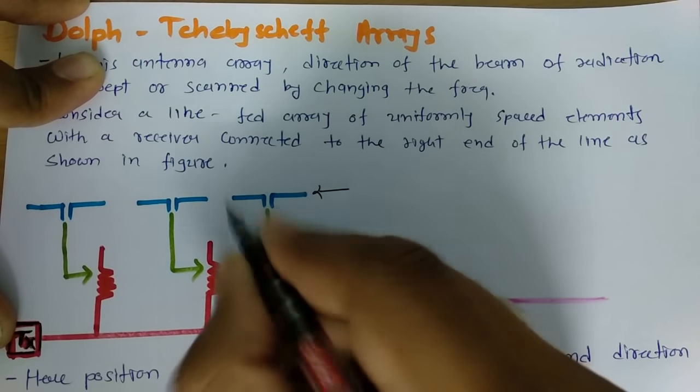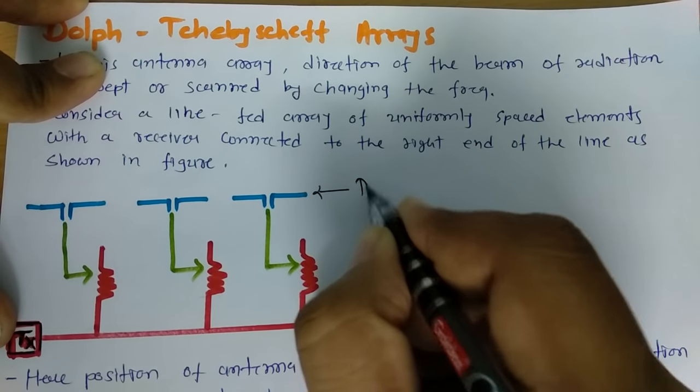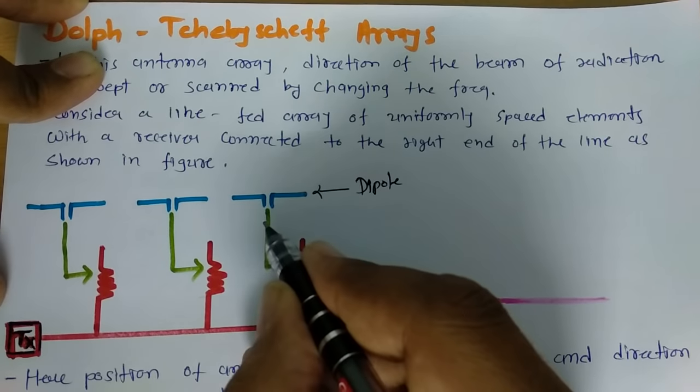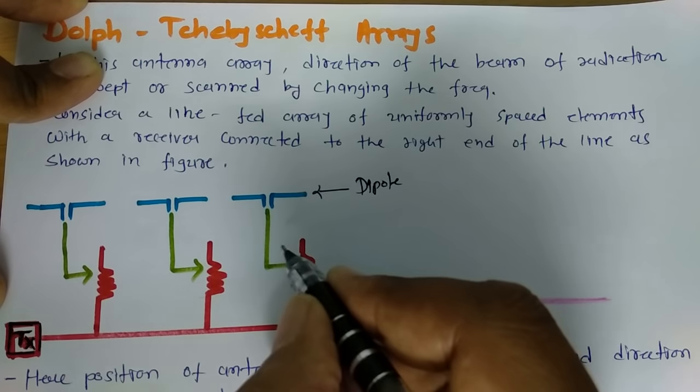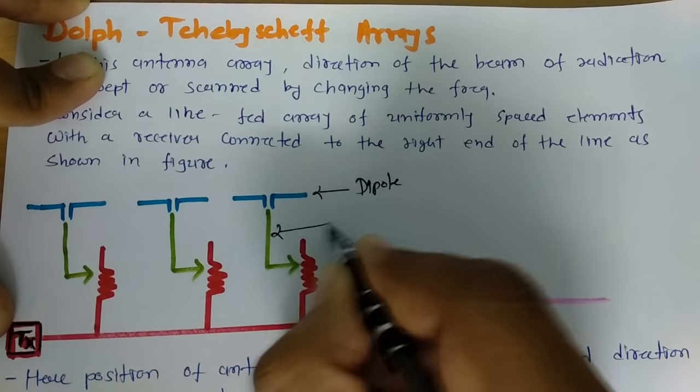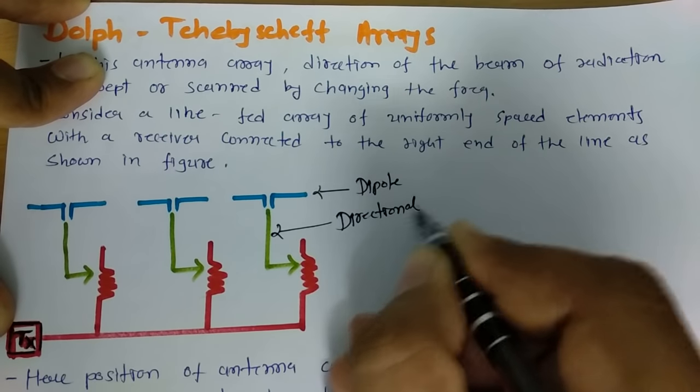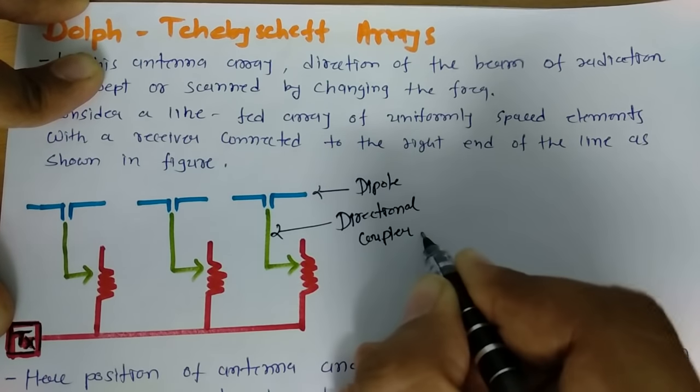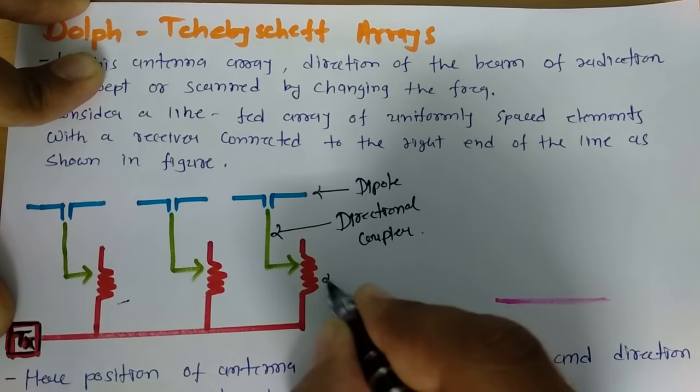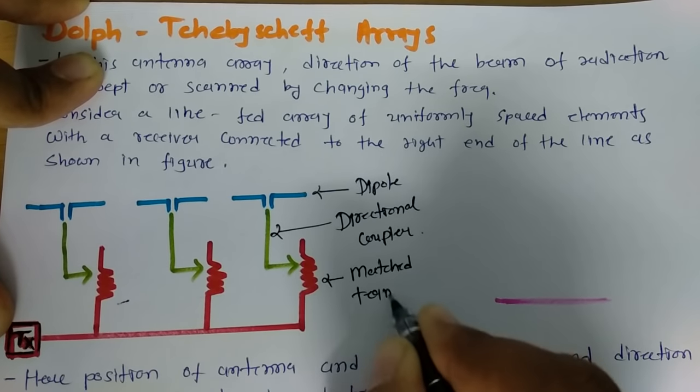By this sky blue color, here dipoles are there. Dipole antenna that is there. Here by this greenish color, we have directional coupler. This is directional coupler and these are matched termination. These are matched termination.